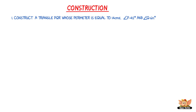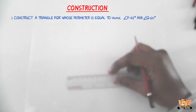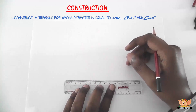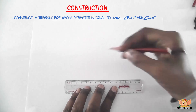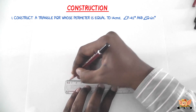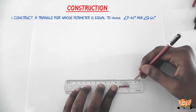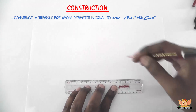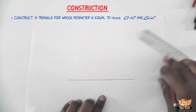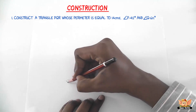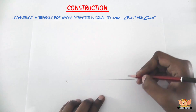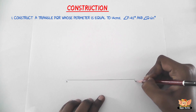To draw triangle PQR, let us follow these steps. The first step is to draw a line segment XY equal to 14 centimeters, which is equal to the perimeter of the given triangle. Name the endpoints X and Y.